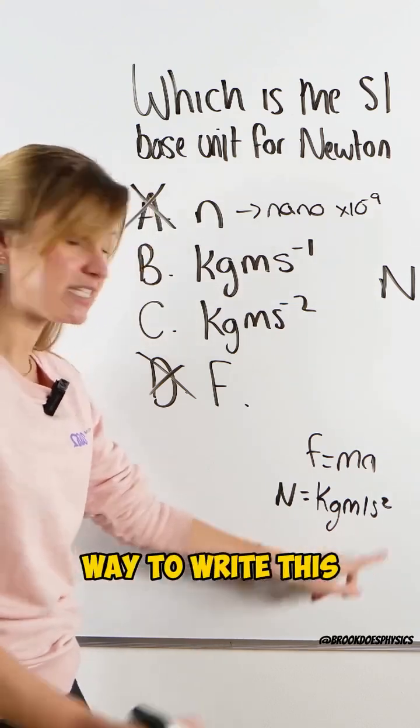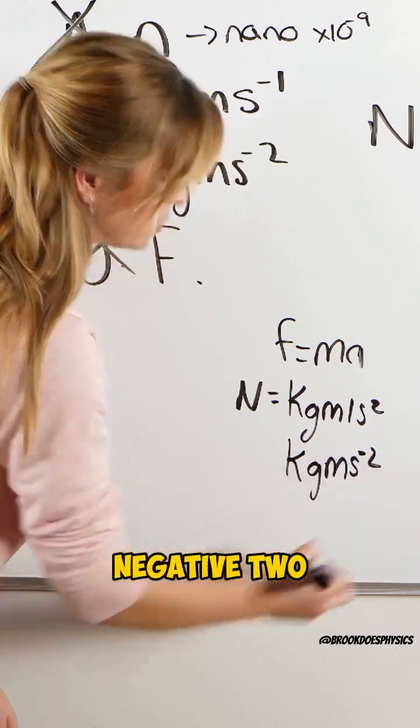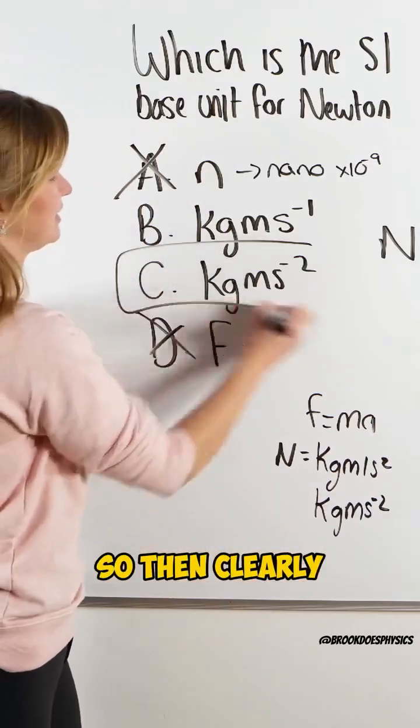And another way to write this because it's in SI base form is kilograms meters to the negative 2. So then clearly it's option C.